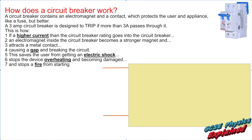Now let's look at a modern circuit breaker — it's got a big switch on it. A circuit breaker contains an electromagnet and a contact which protects the user and appliance like a fuse, but it's better. I'm going to talk about the three amp circuit breaker as an example — just like the fuse, you can get all sorts of sizes: five amps, seven amps, ten amps, thirteen amps. The three amp circuit breaker is designed to trip if more than three amps passes through it.